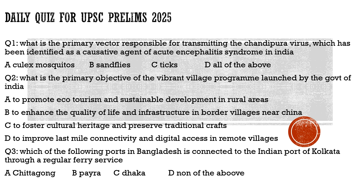Question three: Which of the following ports in Bangladesh is connected to the Indian port of Kolkata through a regular ferry service? Is it Chittagong, Pyra, Dhaka, or none of the above? We discussed connectivity between Bangladesh and India, including the Mongla port. The correct answer here is Chittagong — option A — which is connected to Kolkata through a regular ferry service.